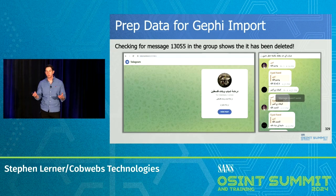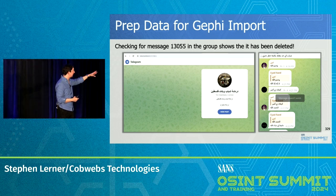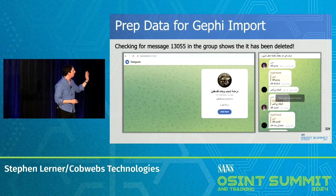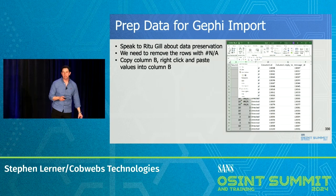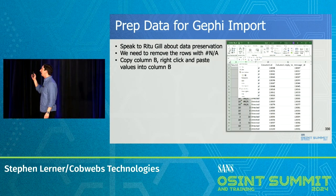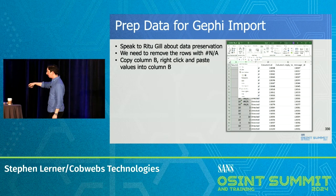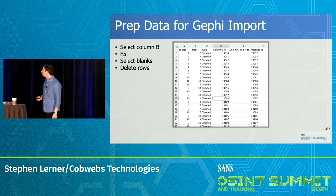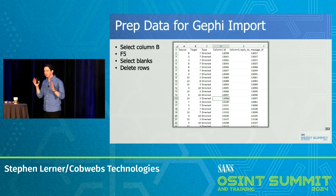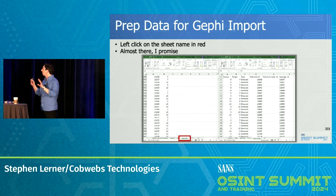We need to get rid of those NA errors. So again: copy, paste as values to remove the formula, then F5, delete the blanks. We will end up just with the messages and who they replied to. We're almost there.